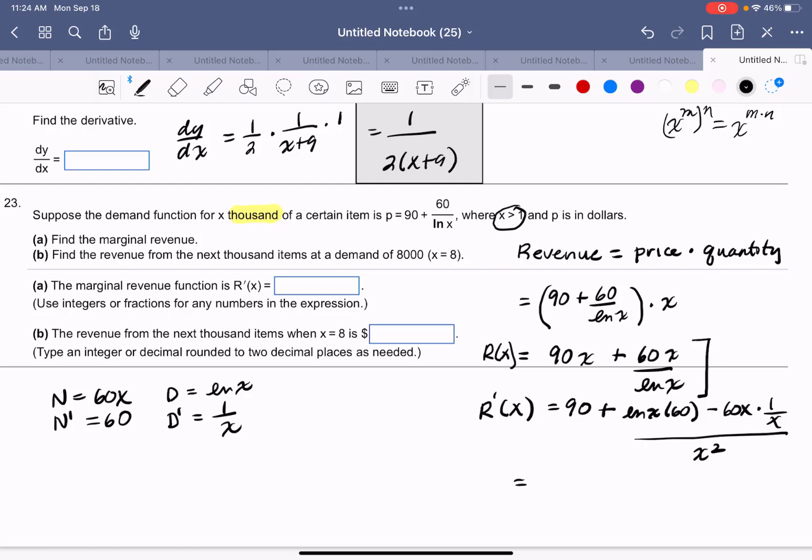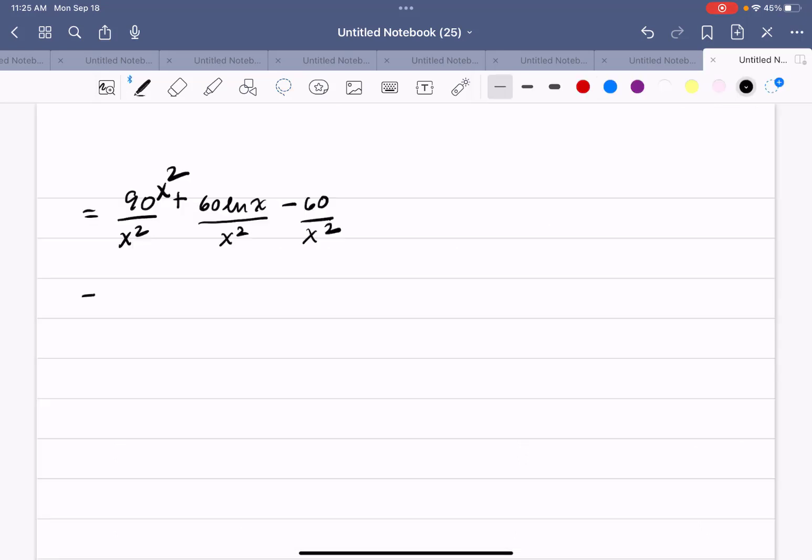So I can see one reduction that's easy, this x and this x will cancel out, and I have 90 plus 60 natural log of x minus 60, and each of those is over x squared. So I'm going to put this over x squared, and if I put an x squared in that denominator, I have to also put it in the numerator, and the last thing I could do is I could write all of this over x squared. So 90x squared plus 60 natural log of x minus 60, and all of that is over x squared. So this is my marginal revenue.